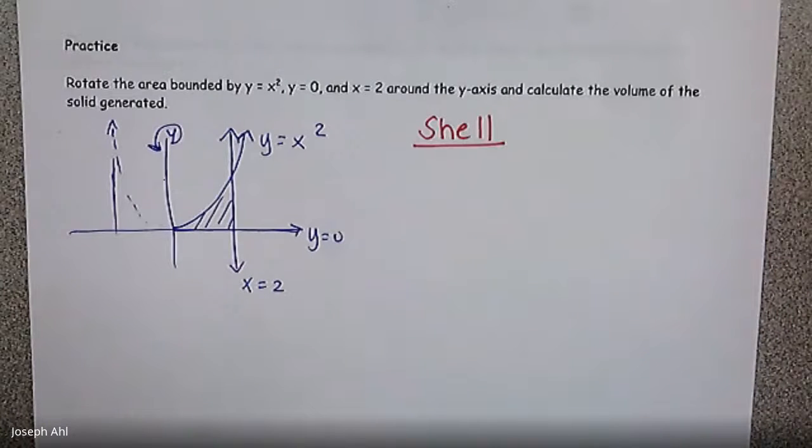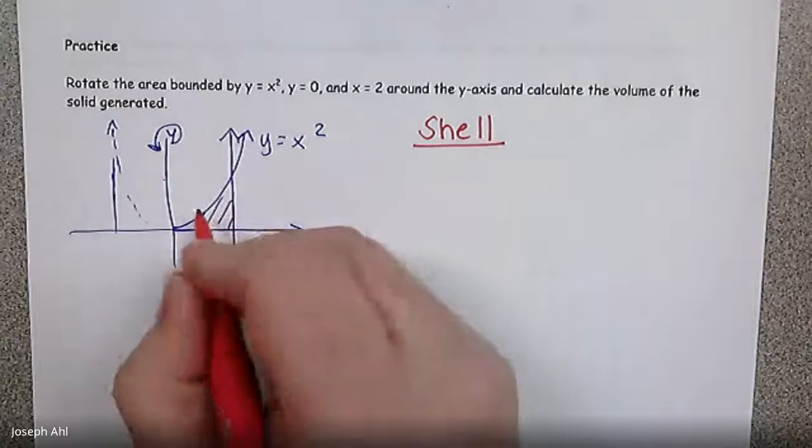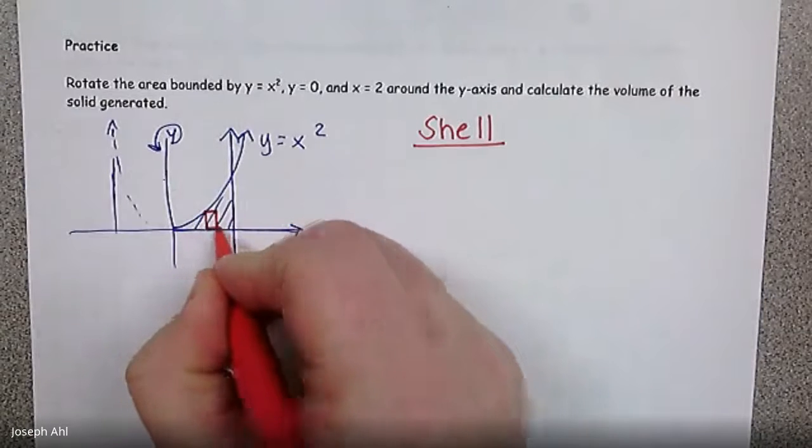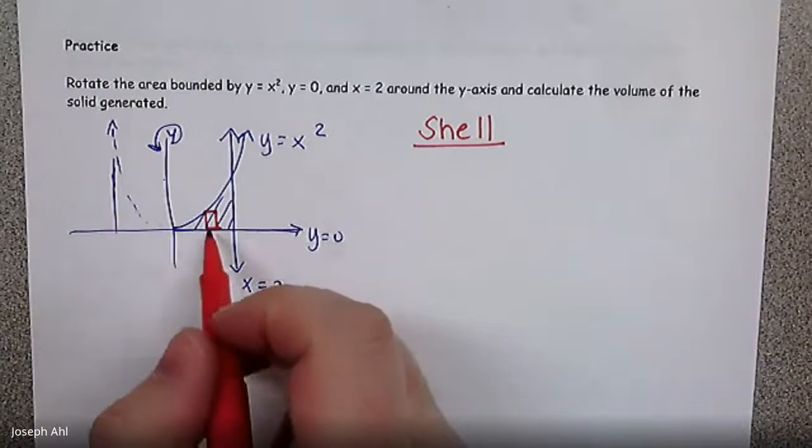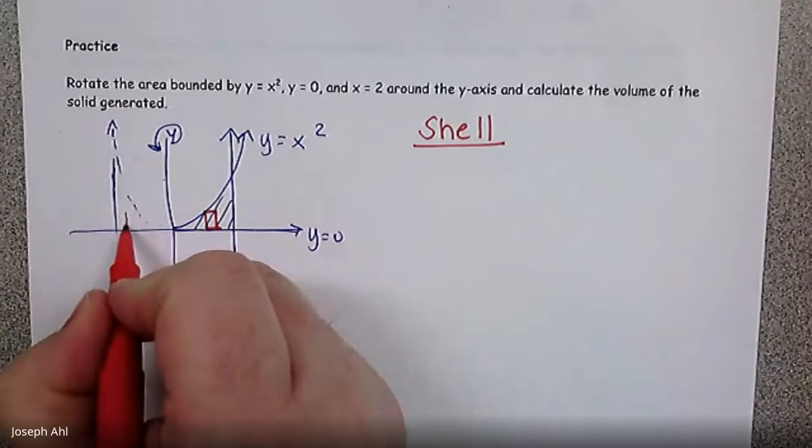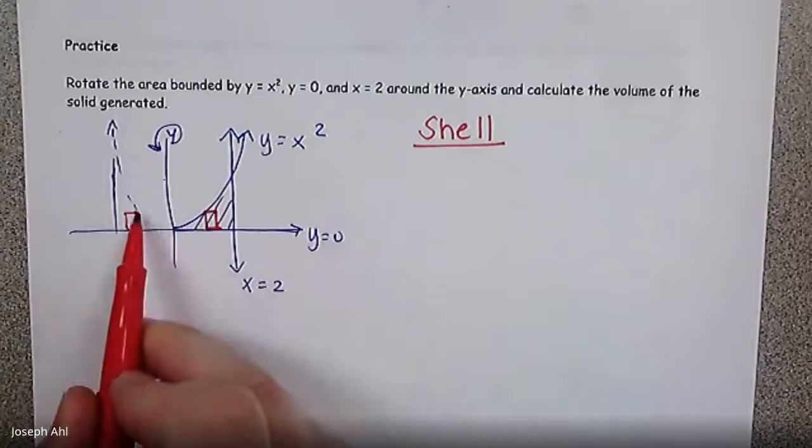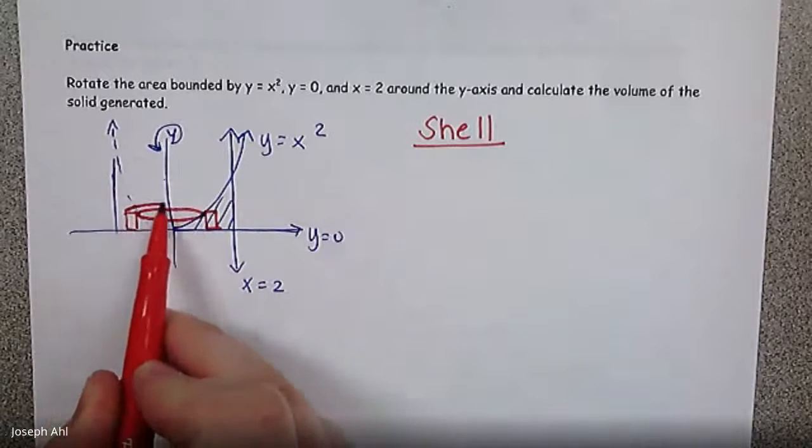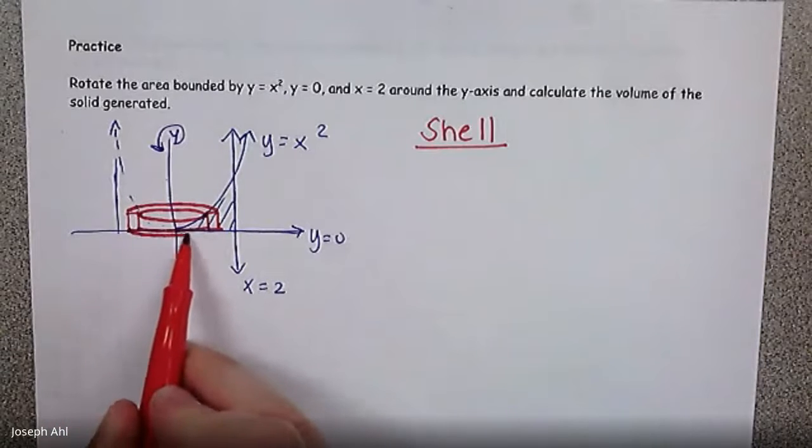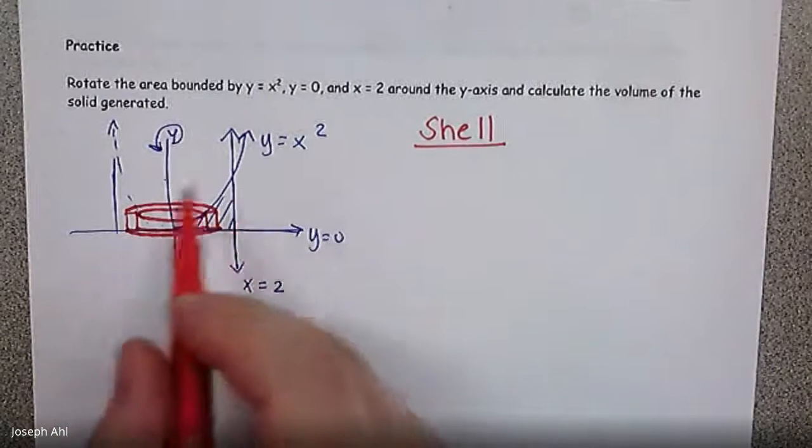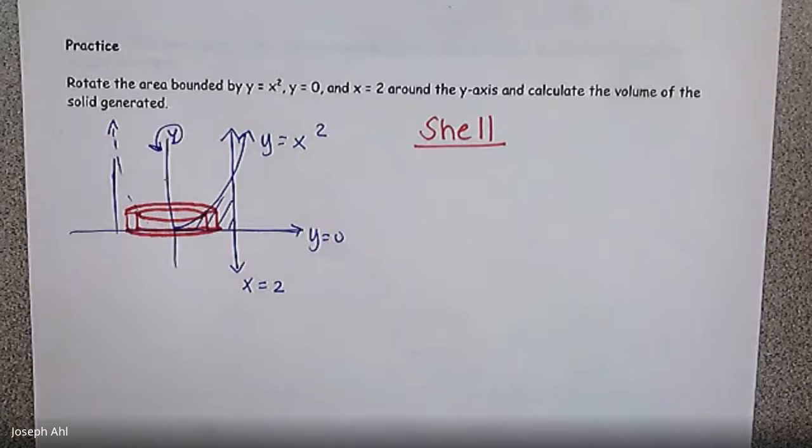So if we're thinking about shell, if we're rotating around the y axis, the rectangles that we draw have to be parallel to the axis that we're revolving around. So if I draw a rectangle parallel to the y axis, we'll do that matching rectangle on the other side. The shell that's formed would look something like this. And just do your best to draw these diagrams here.